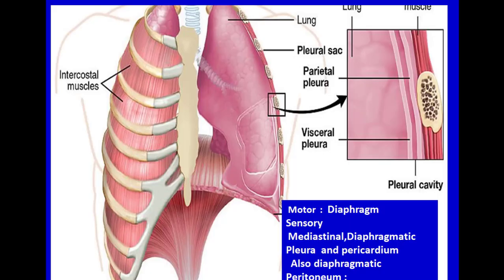As shown in this figure, the phrenic nerve is motor to the diaphragm and sensory to the mediastinal pleura, the diaphragm, and the pericardium.